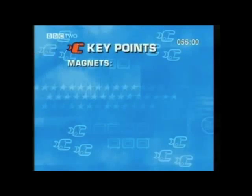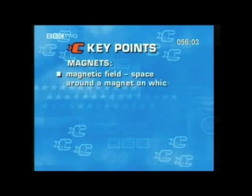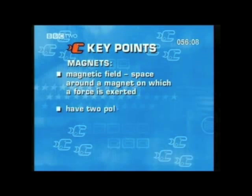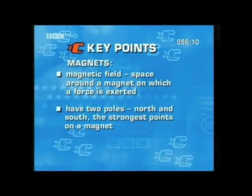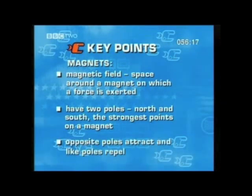The key points are: the magnetic field is the region or space around a magnet in which a force is exerted. All magnets have two poles, called north and south, and these are the strongest points on a magnet. Opposite poles — a north and a south — will attract each other, while like poles — for instance a north and a north — will repel each other.